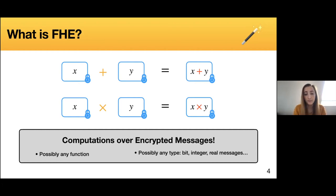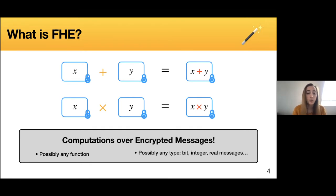By combining addition and multiplication, we can possibly evaluate any function. The types of messages we can treat in homomorphic encryption are various — we can have bits, integers, and real messages.